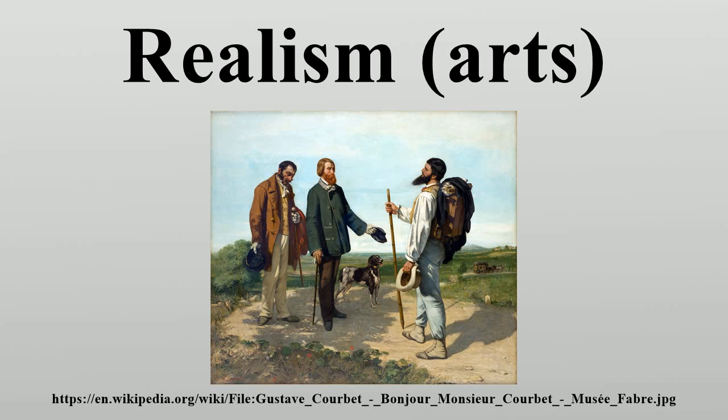The realism art movement in painting began in France in the 1850s. After the 1848 revolution, the realist painters rejected Romanticism, which had come to dominate French literature and art, with roots in the late 18th century. Visual arts realism is the precise, detailed and accurate representation in art of the visual appearance of scenes and objects — drawn in photographic precision. Realism in this sense is also called naturalism, mimesis or illusionism.